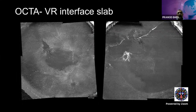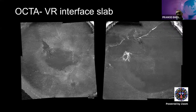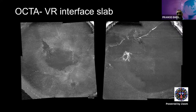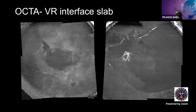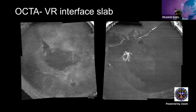At the vitreoretinal interface, subtle new vessels can easily be detected on OCTA. Being a non-invasive imaging modality, it is fairly safe in patients with significant systemic issues where fluorescein angiography cannot be performed.